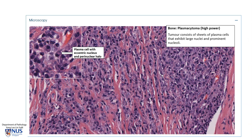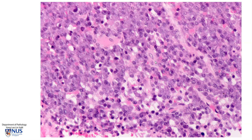Microscopically, plasmacytoma is characterized by masses or sheets of abnormal plasma cells, and the plasma cells can range in appearance from relatively mature — as you can see here, they very closely resemble normal plasma cells with a perinuclear hof — to cells that appear less mature or less similar to benign plasma cells. In this particular tumor, we can actually see prominent nucleoli in quite a few of these abnormal neoplastic plasma cells.